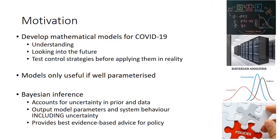The motivation behind this work is to develop accurate and robust mathematical models for COVID-19. These are not only useful to help understand the disease and its spread, but also have great practical importance. Their ability to look into the future and test possible control strategies before applying them in practice is key to determining what to do next. Mathematical models are only useful if they are well parameterised, and when it comes to parameterisation, Bayesian inference is the gold standard. This is because it can account for uncertainties in our prior knowledge and the data, and output estimates for model parameters and system behaviour including uncertainty, so providing the best evidence-based advice which can be fed into public policy.